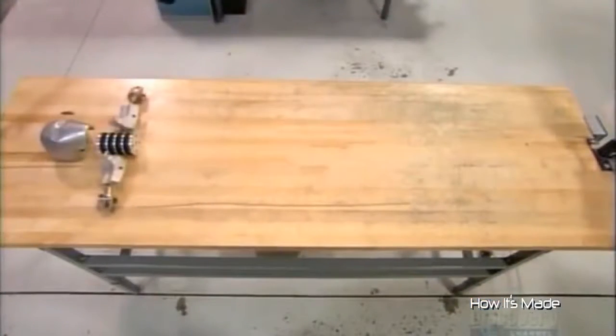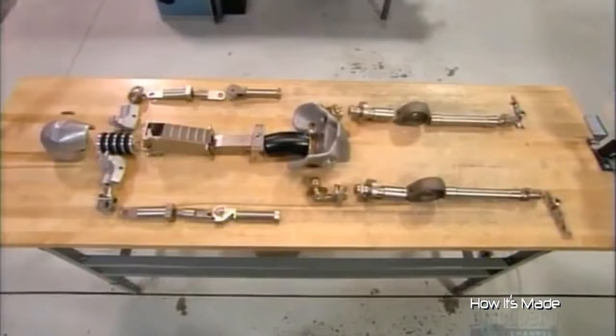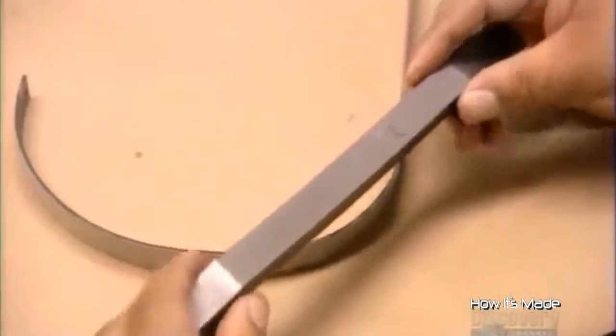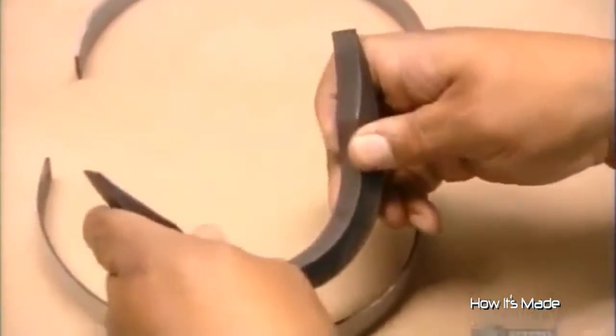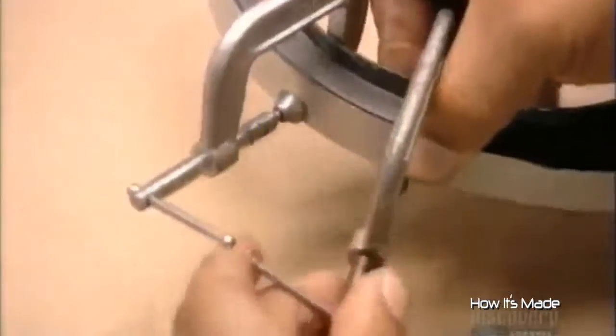Now they lay out the bones and corresponding load cells that will be connected to the dummy's ribcage. To make the ribcage, steel bands are bonded to a flexible damping material. This material was originally designed to deaden sound in nuclear submarines.